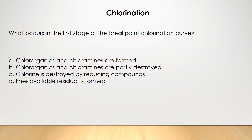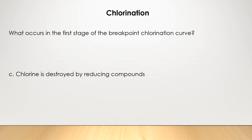Another common type of question that you'll see on the exam is chlorination. The question reads: what occurs in the first stage of the breakpoint chlorination curve? The answer choices are: chlororganics and chloramines are formed; chlororganics and chloramines are partly destroyed; chlorine is destroyed by reducing compounds; or free available residual is formed. The correct answer is C, chlorine is destroyed by reducing compounds.